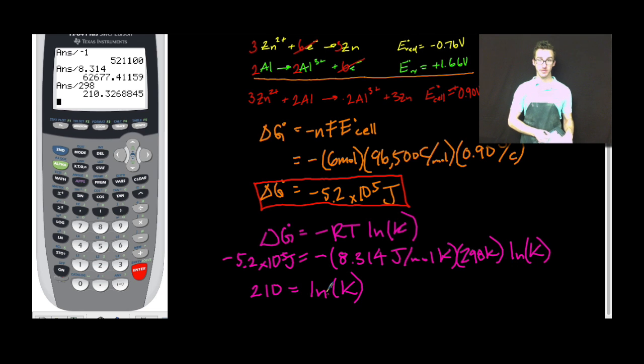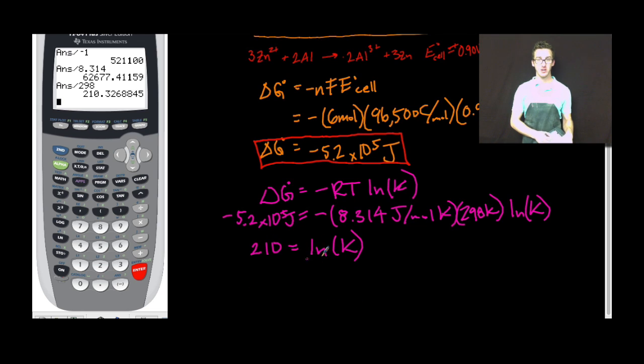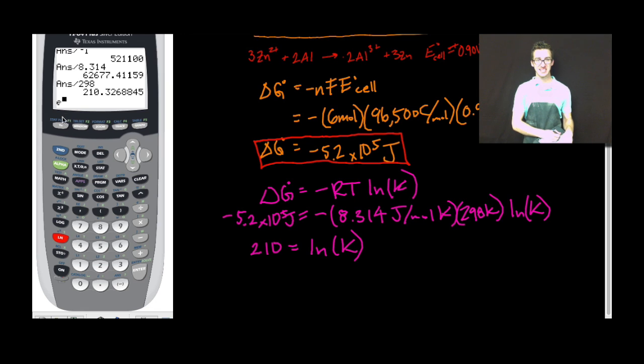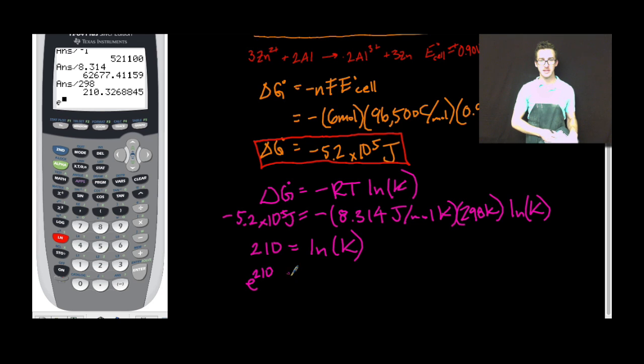Be careful here if you're shaky on your math. In order to isolate K, we're going to do second natural log. Let's get us that little e exponential. E to the 210 equals our equilibrium constant. Enter.